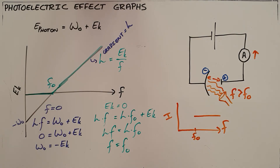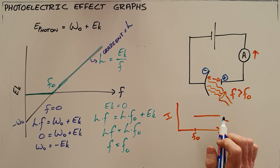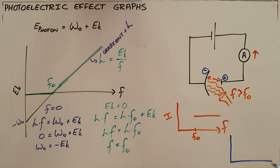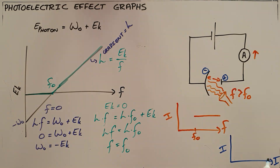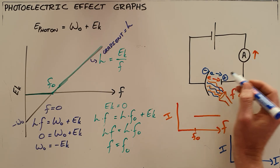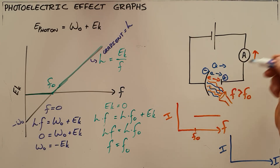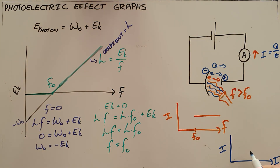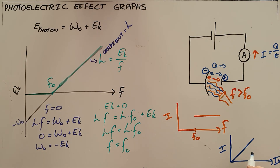This circuit also demonstrates that intensity changes the number of electrons ejected. If we plot current versus intensity instead, we find that as we increase the intensity of the light, we increase the number of electrons ejected. More electrons ejected means more charge moving across the gap, and since current equals charge over time, the current increases as intensity increases.